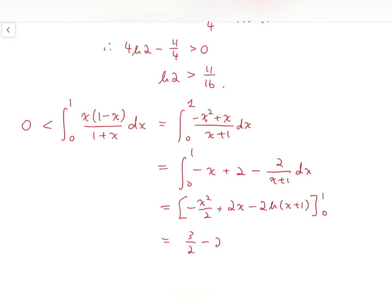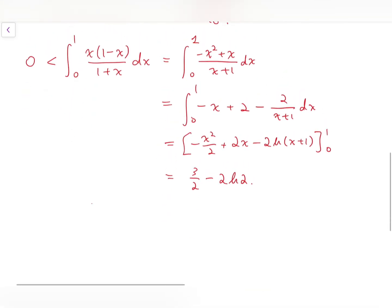Then we'll have 3 over 2 minus 2 times natural log of 2. And from this, we can say that natural log of 2 is less than 3 over 4.